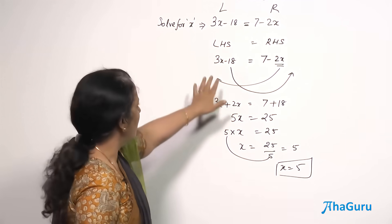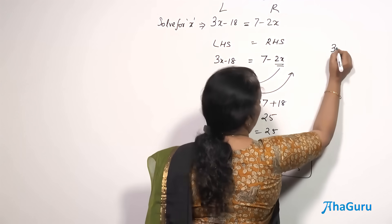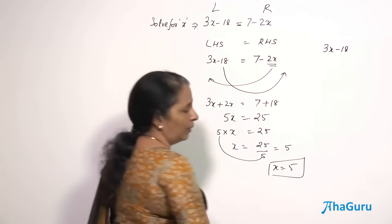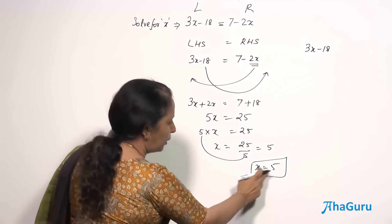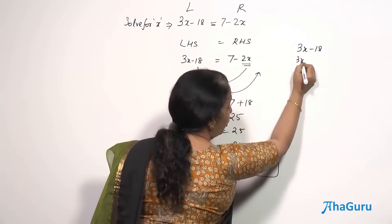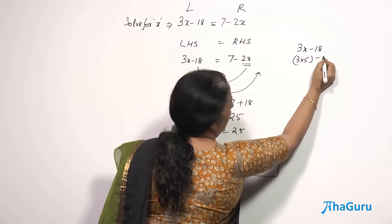Substitute. When you say substitute, take this only 3x minus 18. Put x is equal to 5. When I put x is equal to 5, it becomes 3 into 5 minus 18.